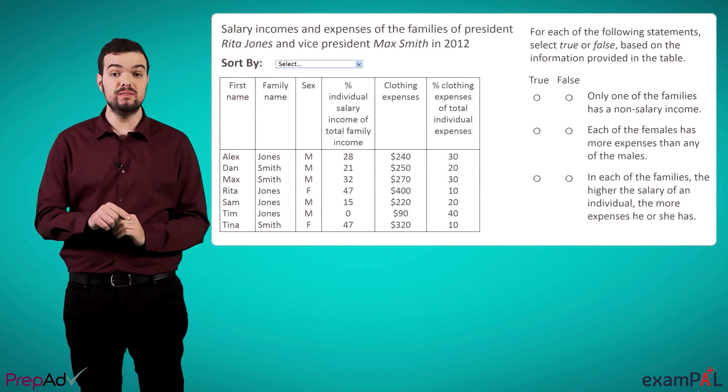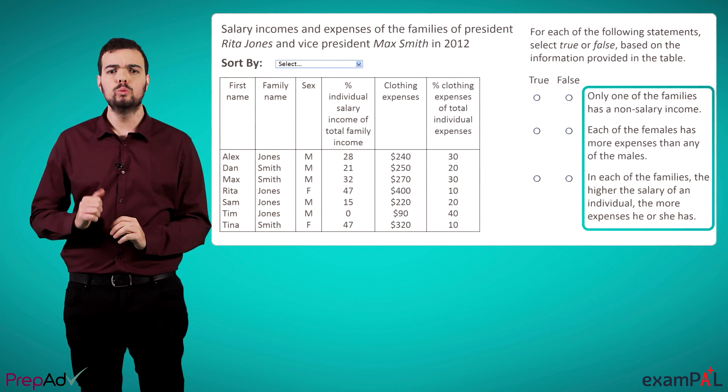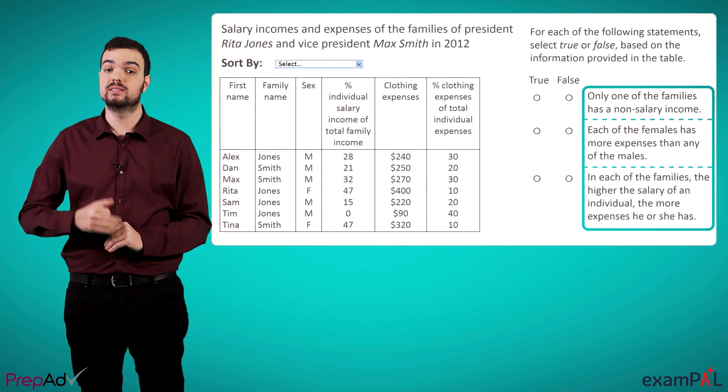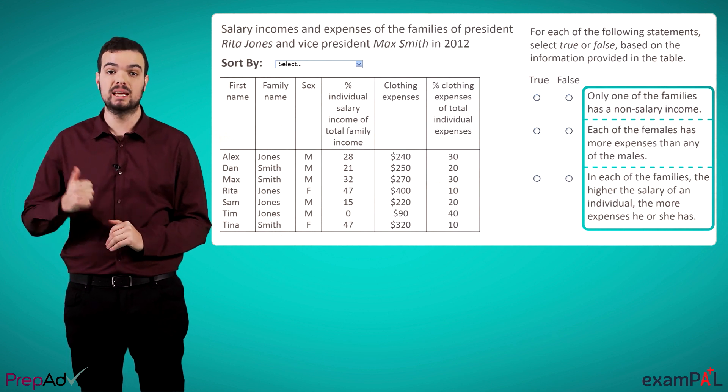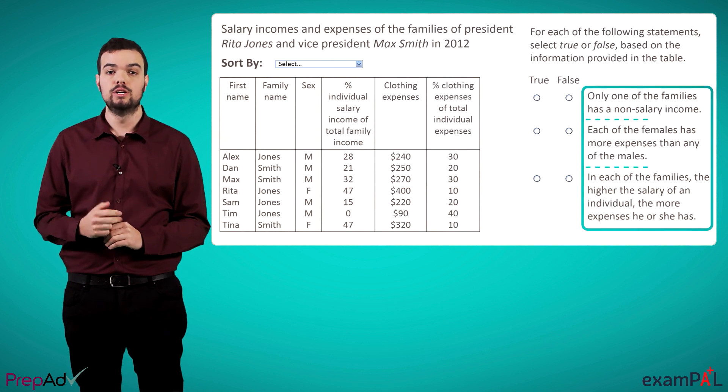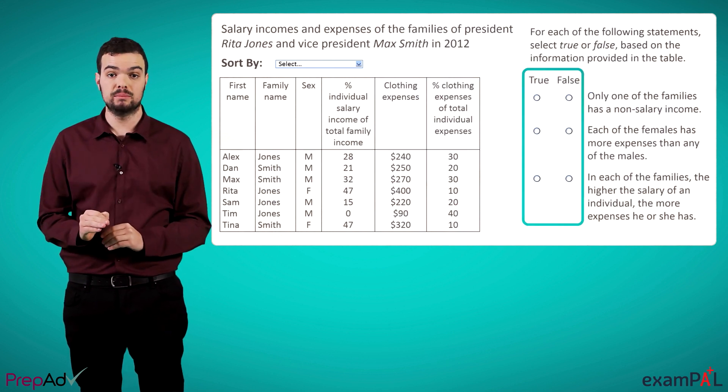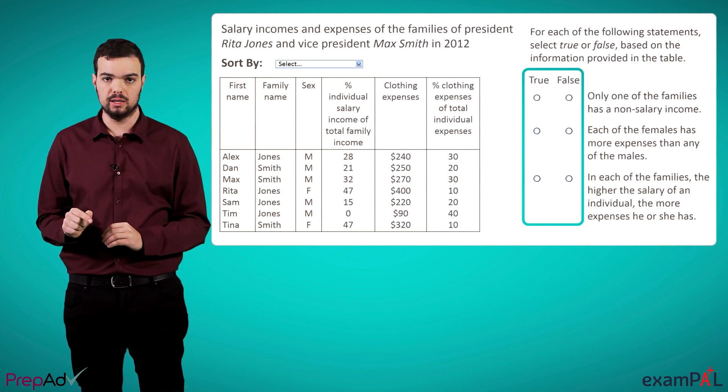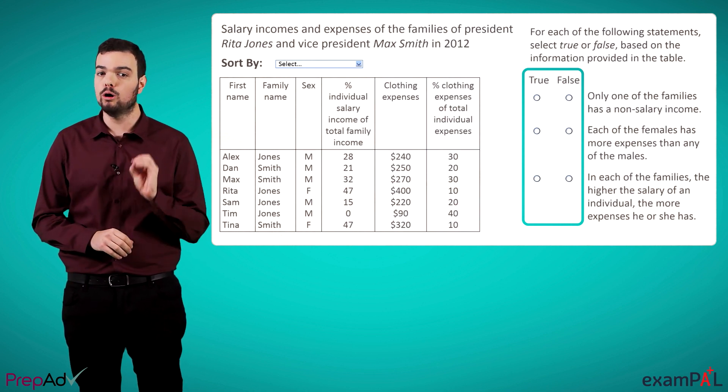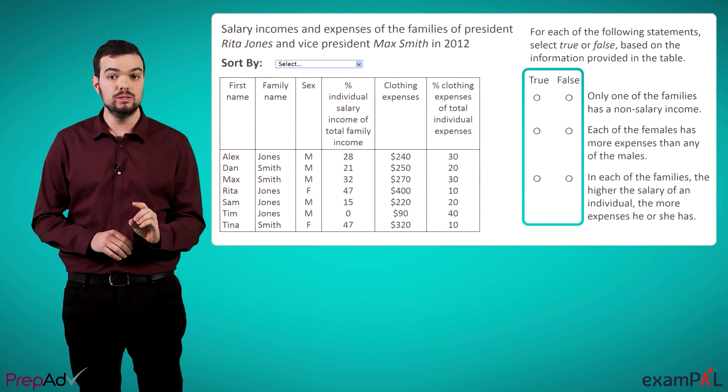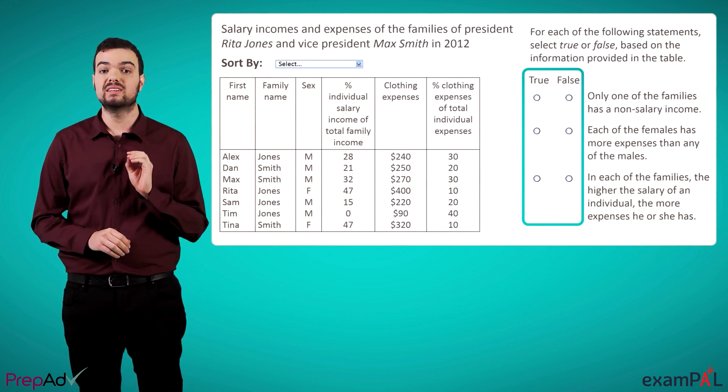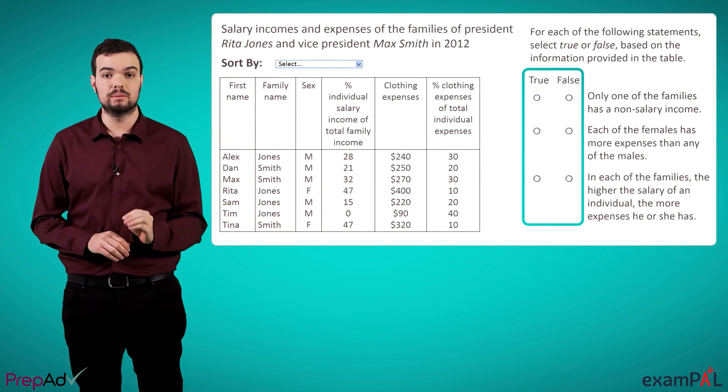Now, to the right of the table, we have a question, which is really made up of three statements, each of which refers in some way to the information in the table. By these statements are two columns, true and false, and for each statement, we have to select the appropriate column. What's important to realize is that there is no partial credit. Each table is a single question, and in order to get points for it, we have to get all three true or false statements right.